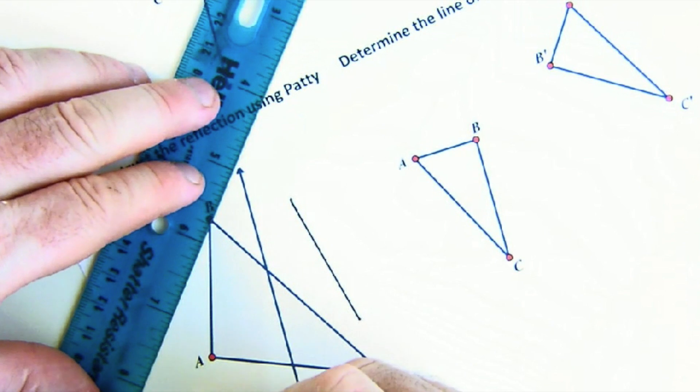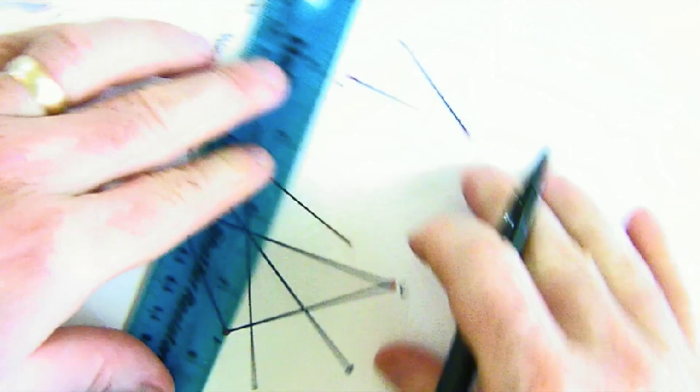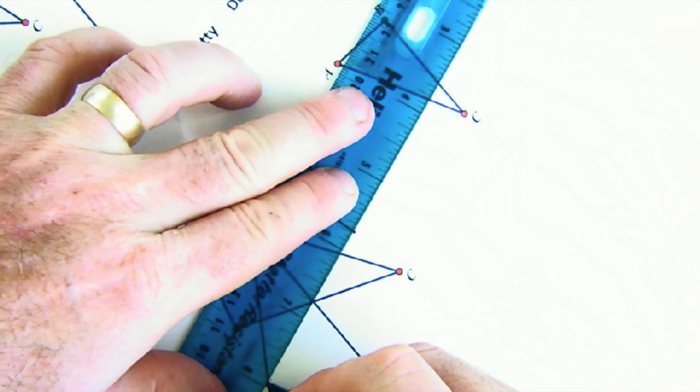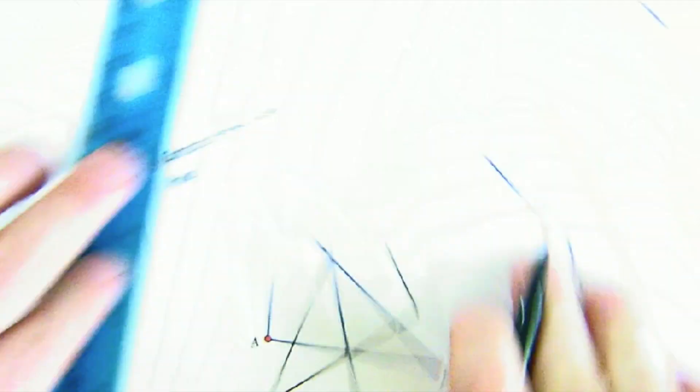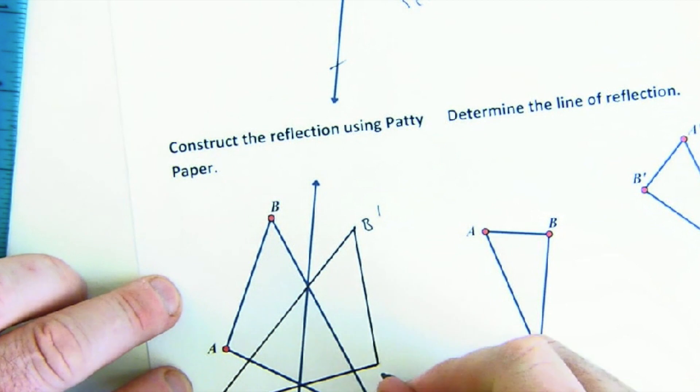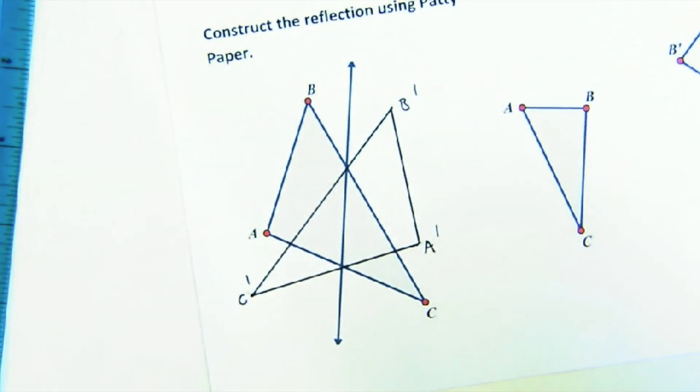What I also do sometimes is use my pointer and poke through the patty paper. And, in doing so, make a hole. And that hole is where I need to go. There it is. Let's take a look. We did pretty good. B. Let's see. A prime. C prime. And that looks real nice.